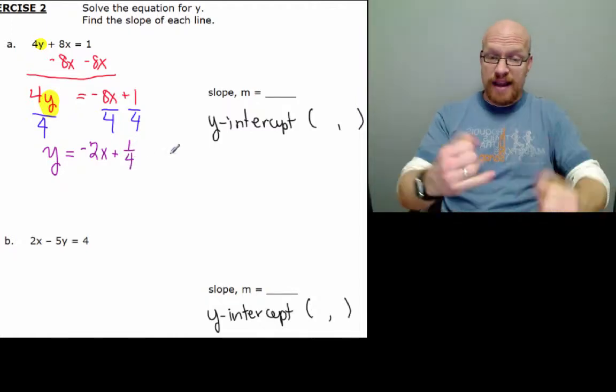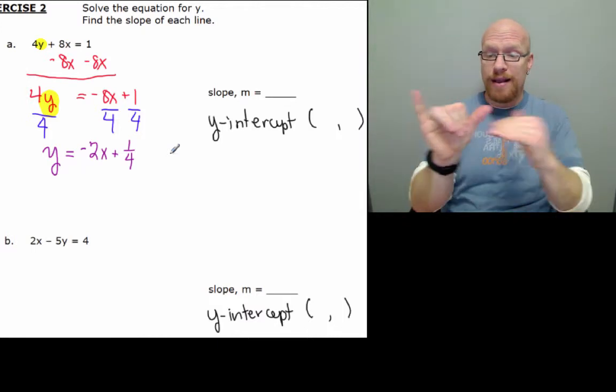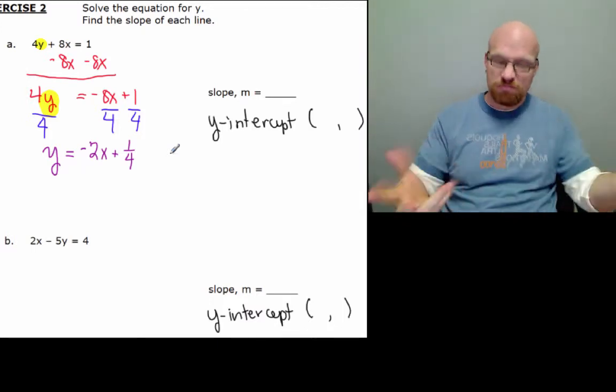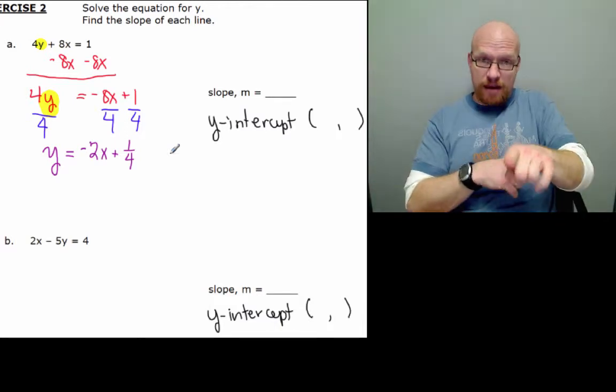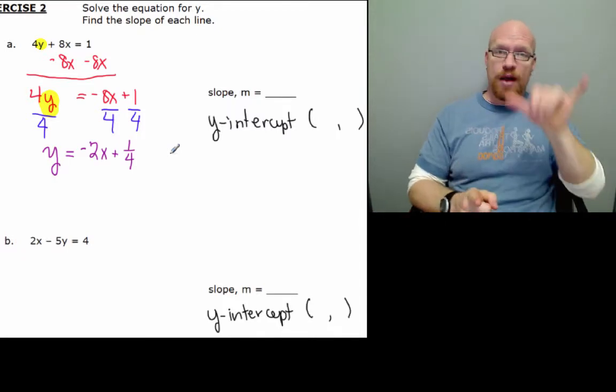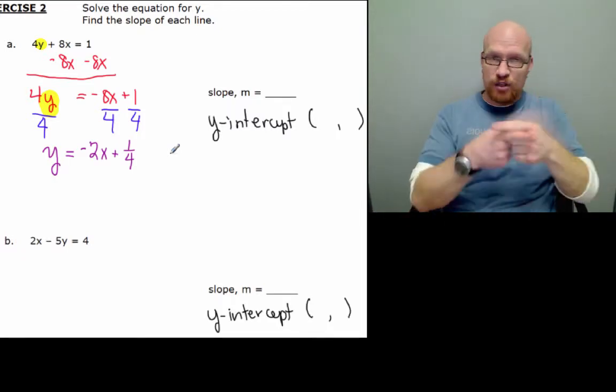So now finally I have y isolated: y equals negative 2x plus 1 quarter, 1 fourth. Now from that I can identify my slope and my y value for the y-intercept.